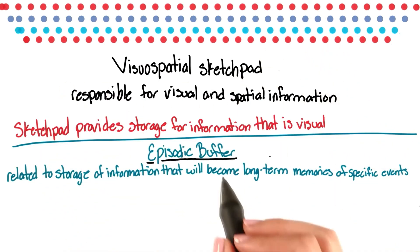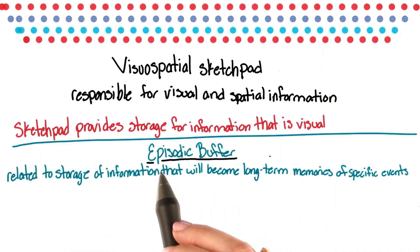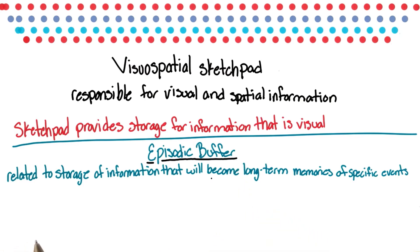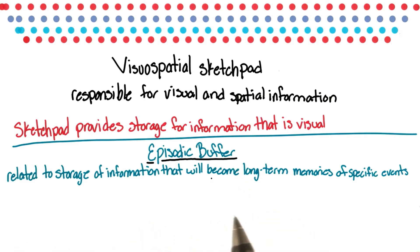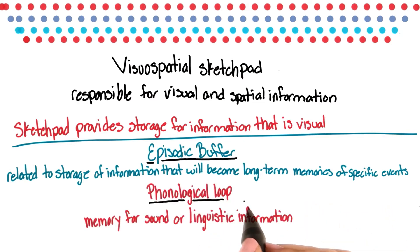The second part of the storage system is the episodic buffer. This is related to the storage of information that will become long-term memories of specific events. And finally, we have the phonological loop. As the name implies, it's our memory for sound or linguistic information.